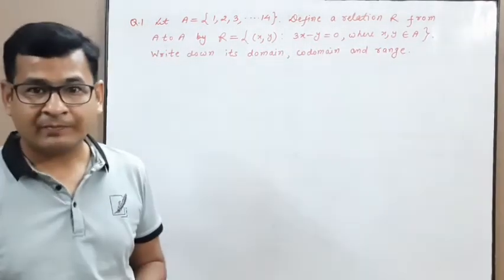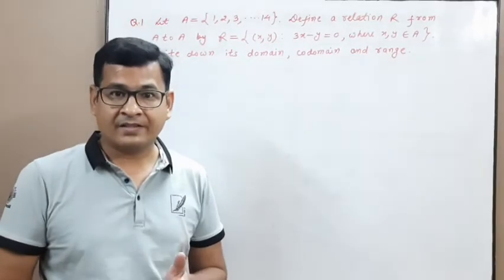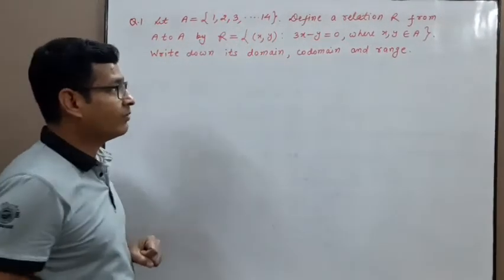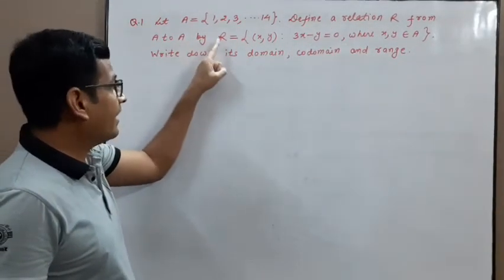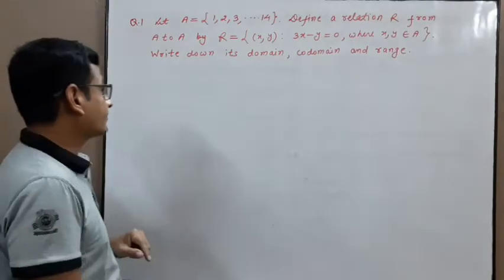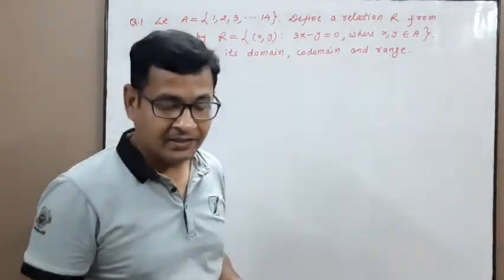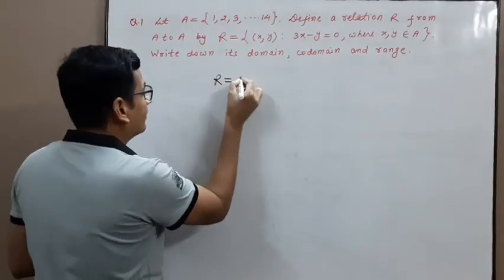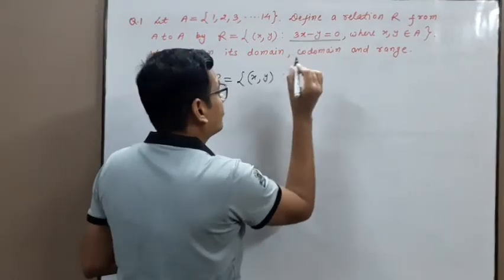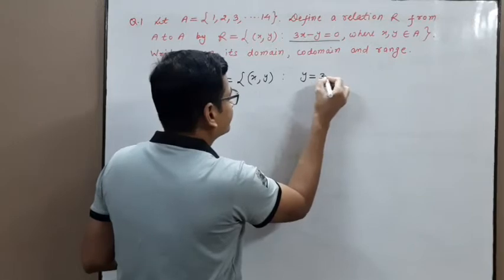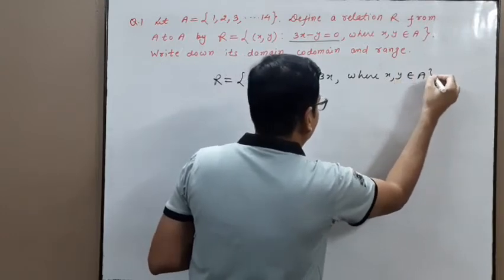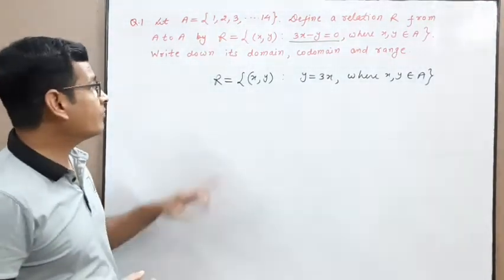Let's do some problems based on relations, domain, range, and codomain. Problem number 1: let A equal to {1, 2, 3, 4}. Define the relation R from A to A by R equals the set of (x, y) such that 3x minus y equals 0, where x and y belong to A. Write down its domain, codomain, and range. First, write relation R in set-builder form: R is the set of (x, y) such that y equals 3x, where x and y belong to A.